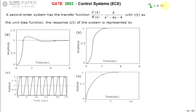If zeta is equal to zero, it is called an undamped system — this is the undamped second-order system response. If zeta is between zero and one, it is called an under-damped system.